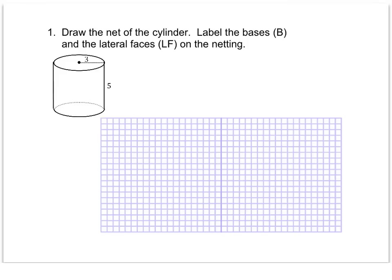Section 12.3 is all about cylinders, and in this first video we're asked to develop the formula for the surface area of a cylinder. Keep in mind that cylinders are similar to the prisms we just learned about because prisms had two bases. Cylinders also have two bases, but this time the bases are circles, so there are going to be some similarities and some differences.